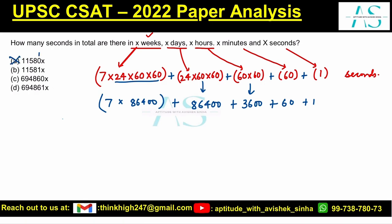Pehla wala option toh bilkul nahi banega kyunki plus one ho raha hai, toh yeh zero nahi hona chahiye. Doosra wala bhi nahi banega kyunki woh bahut choti value hai. Baqi ke do options bachte hain — last mein one hai. Inko add karo: resultant summation would be 6,94,861, aur kyunki humne x rakha hai, toh x seconds.